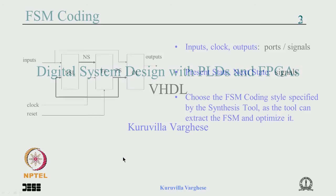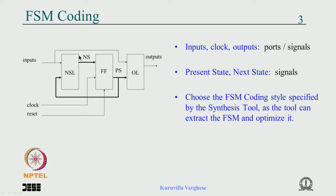We looked at the block diagram of the state machine — a three-block diagram with inputs, clock, reset, and output. Clock and reset normally come from outside, so they are ports. If it is internal it can be a signal. When integrating with the data path, some inputs could be ports or signals. Very importantly, though you can adopt various coding styles, you have to choose the style prescribed by the synthesis tool.